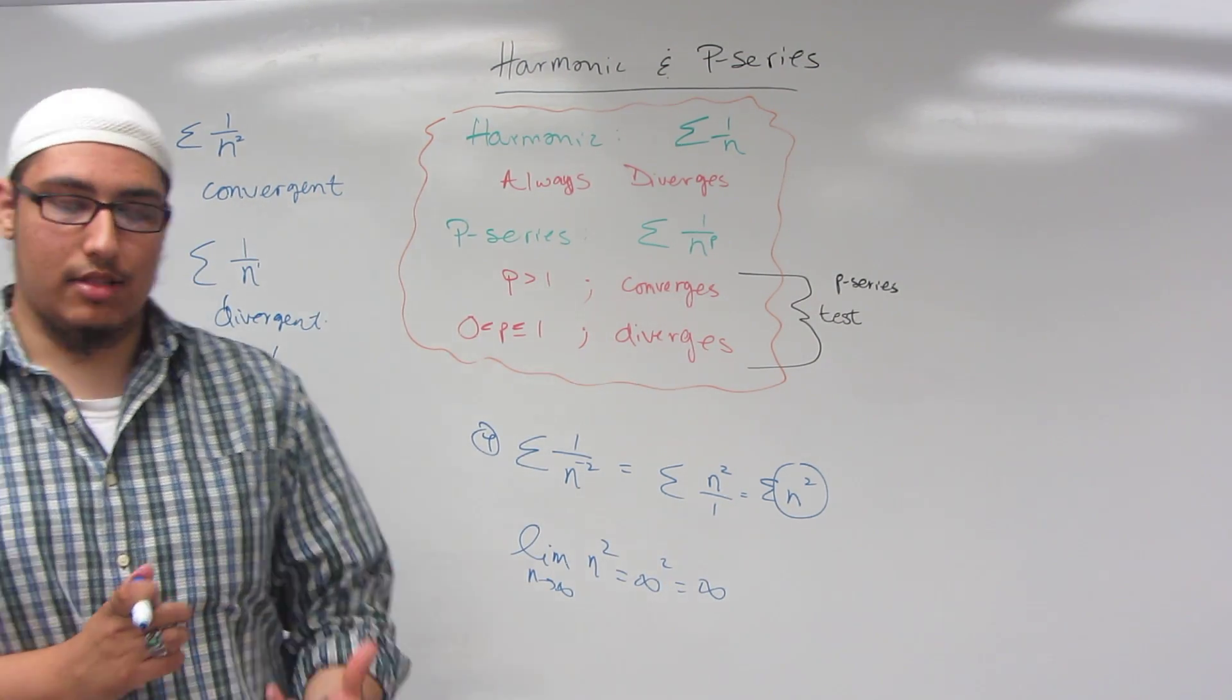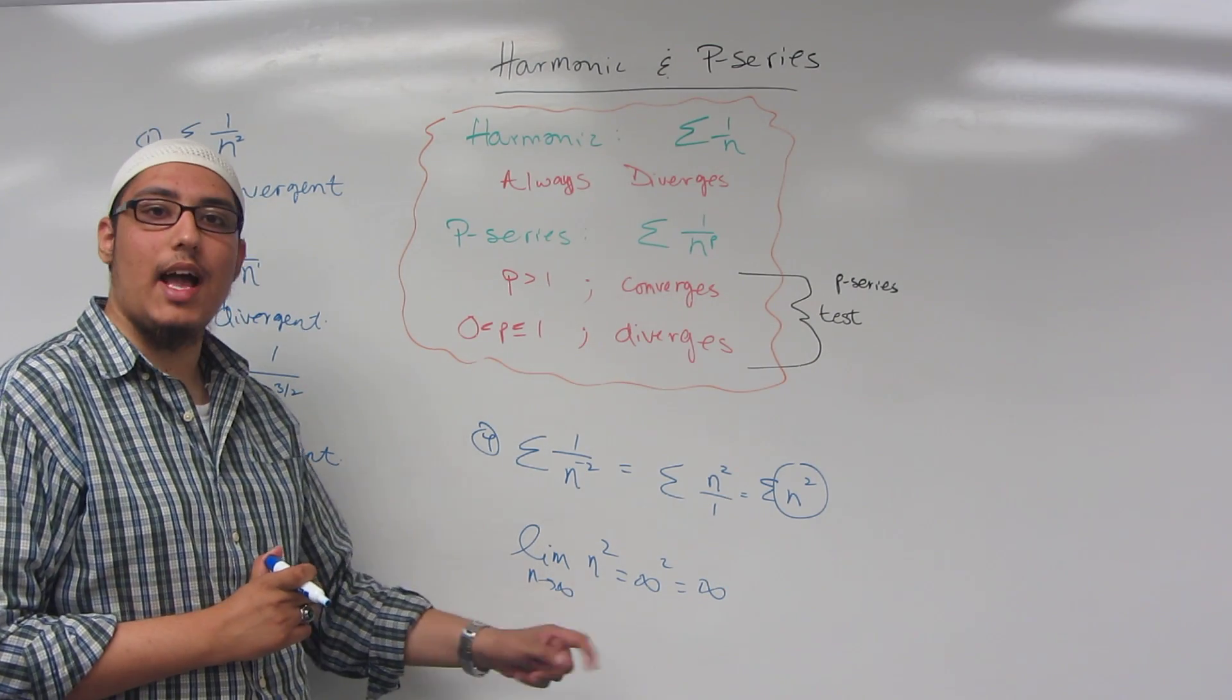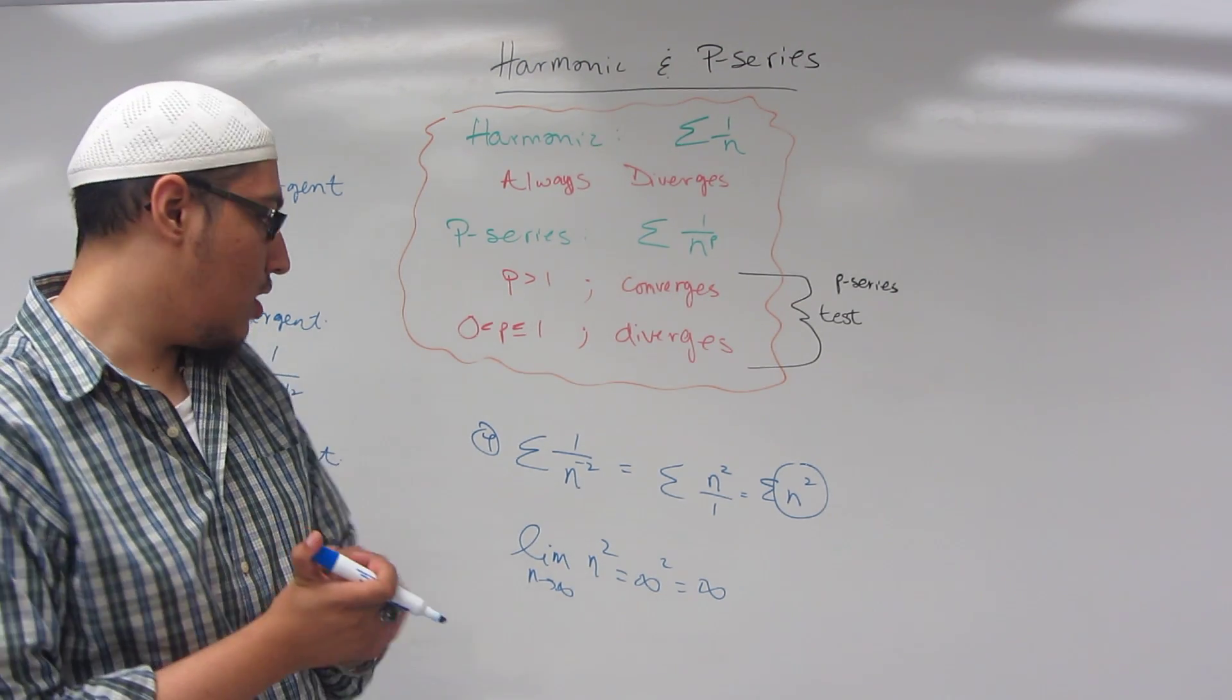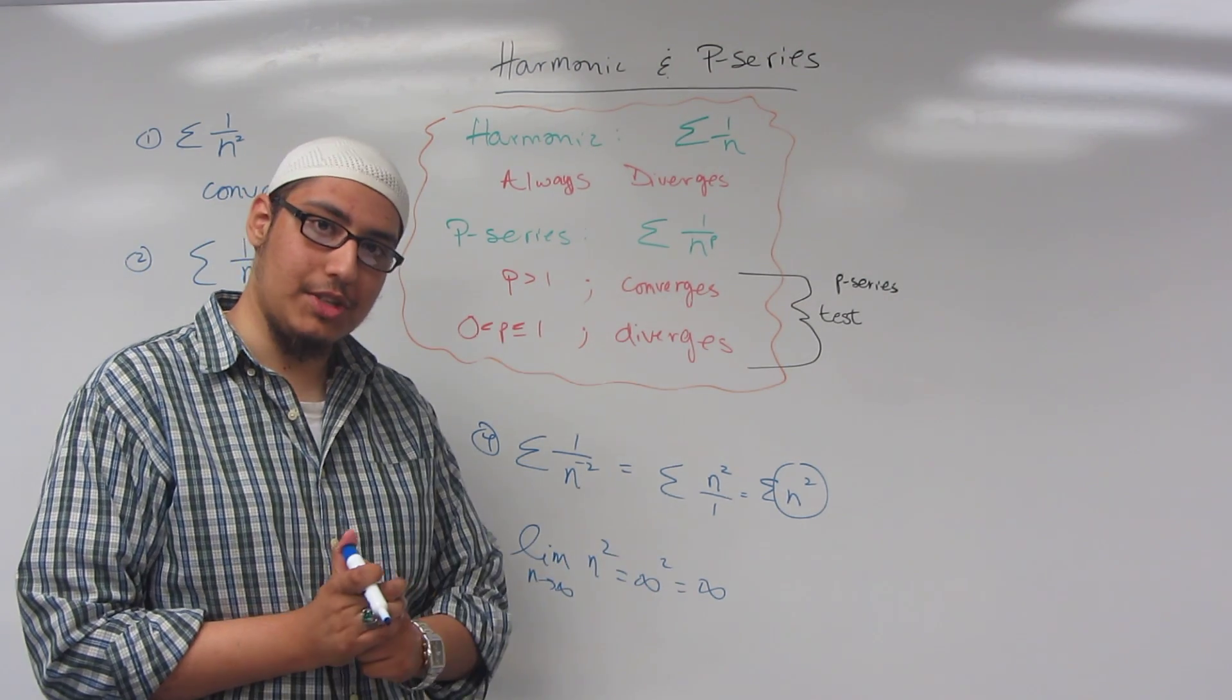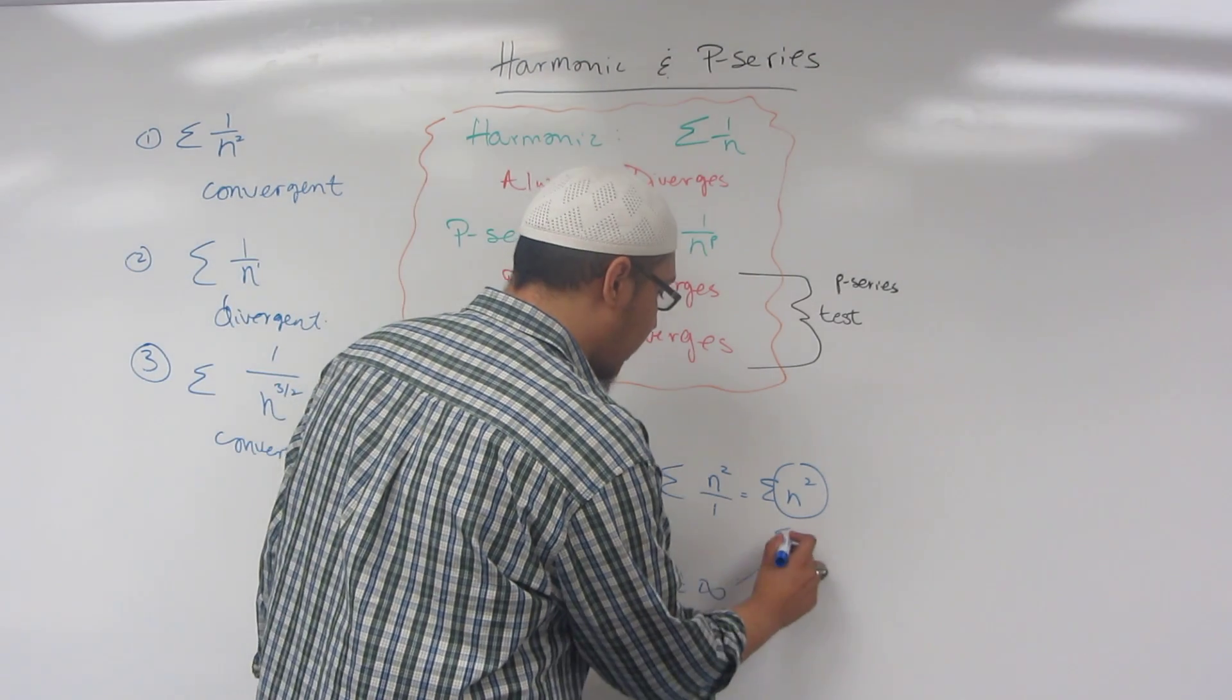The nth term test states that if you take the limit n approaches infinity of your series, and it does not equal zero, your result of the limit does not equal zero, then you are divergent. Therefore, by the nth term test, this is a divergent series.